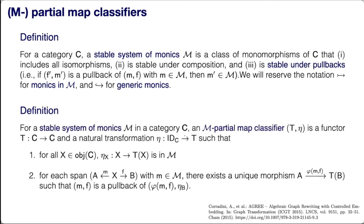The partial map classifier is a functor T and a natural transformation from the identity to T, such that for any X the natural transformation from X to TX is in the class m. More importantly, if you have a span whose left leg is in class m and the right is arbitrary, you can close this diagram into a pullback by applying T to B — this allows constructing final pullback complements.